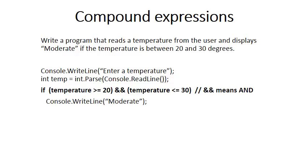This is how we say it in C#. Notice the two symbols — && — which is equivalent to 'and' in C#. So this if statement says: if the temperature is greater than or equal to 20 and the temperature is less than or equal to 30, write line 'moderate'.